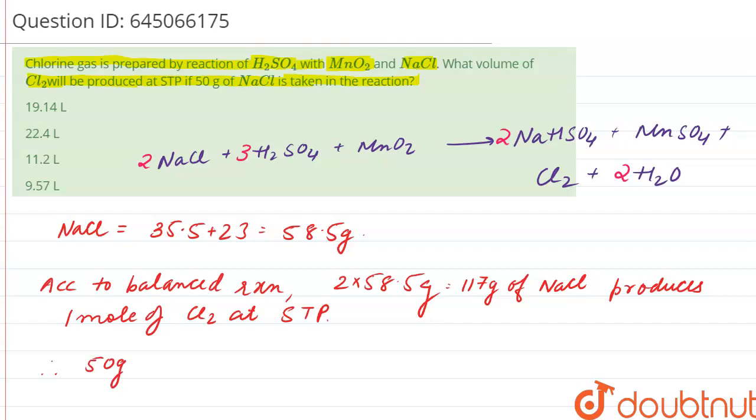Therefore, 50 gram of NaCl will produce 22.4 divided by 117 into 50 liter of Cl2, so that is 9.57 liter. So our answer is 9.57, which is option number B.